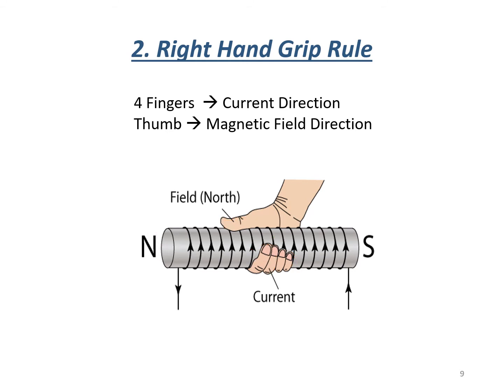Now let's apply the right-hand grip rule. We focus on a relevant section of the wire that is almost straight. In this instance, we let the thumb point in the direction of the current. We swap the rule around — thumb pointing up — and the forefinger will actually be pointing into the page in this region. So the magnetic field is into the page at that point.